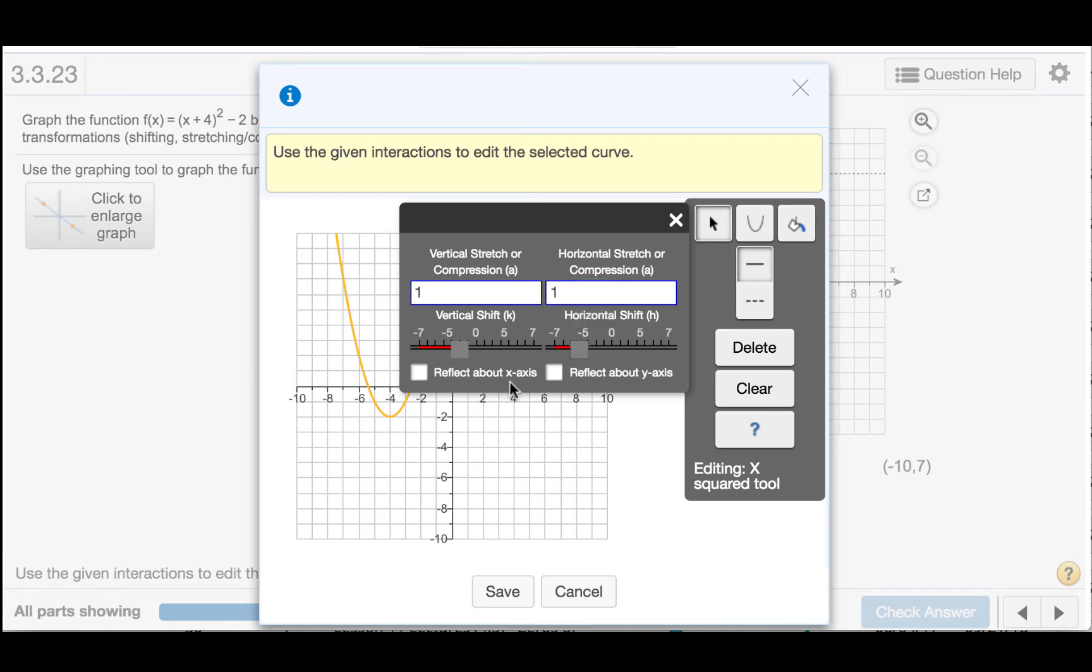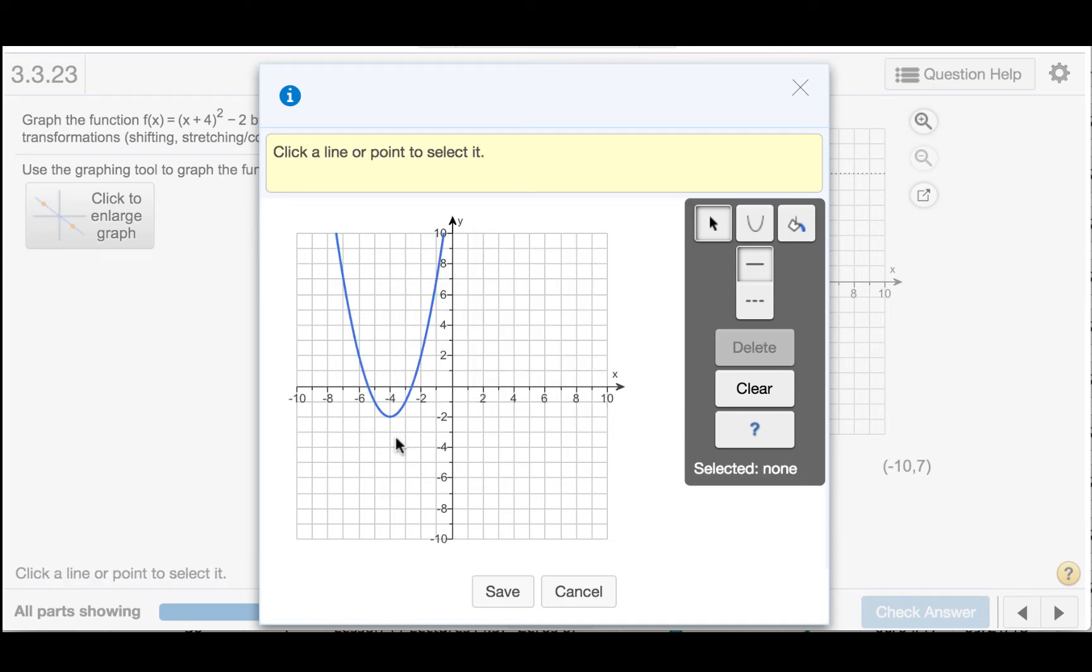We're not going to do a reflection about the x-axis, nor a reflection about the y-axis, so we will leave those boxes unchecked. So this is the graph that I should have. It should be a parabola that opens up with a vertex at (-4, -2). I'll click save.